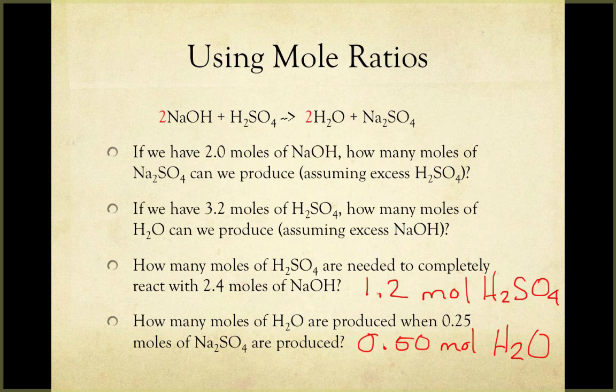Finally in the fourth one, we know that every time one mole of Na2SO4 is produced, we also produce two moles of water. So if we have 0.25 moles of Na2SO4, we'll also get twice as much water, 0.5 moles of water.